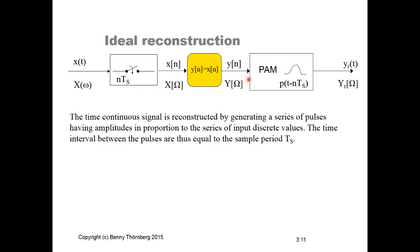This pulse amplitude modulation process can be modeled in the time domain using convolution, and in the frequency domain it is modeled by multiplication. This means the output spectrum equals the input spectrum multiplied by the spectrum of the pulse being applied.